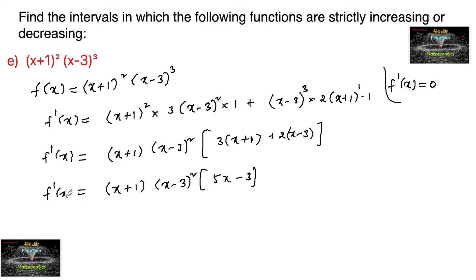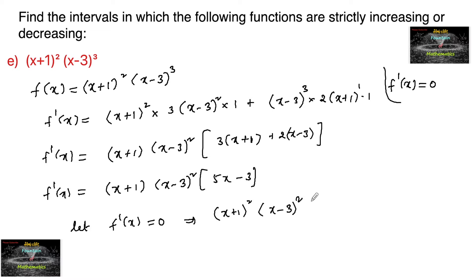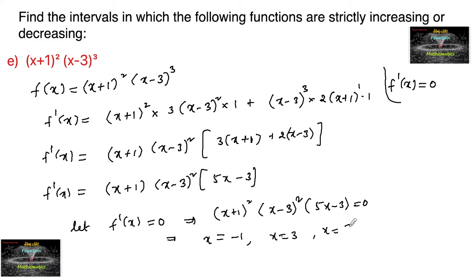Now let us set f'(x) = 0 to find the values of x. So (x+1) · (x−3)² · (5x−3) = 0, which implies x + 1 = 0, giving x = −1; or x = 3; or 5x − 3 = 0, giving x = 3/5.